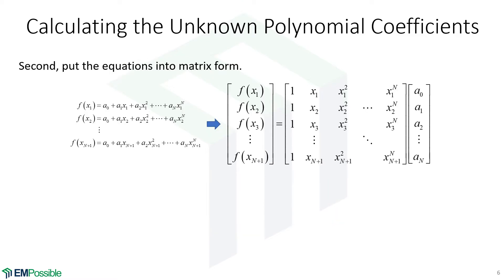Given this large set of equations, we can write them in matrix form. We have a first column vector containing all of the y values — all of our function values. The last column vector over here contains all of the polynomial coefficients. And in this big matrix, it's essentially containing all of the coordinates of our points. We notice we have a column of all ones, the next column is our coordinates, the next is our coordinates squared, cubed, to the fourth, all the way up to the nth power.